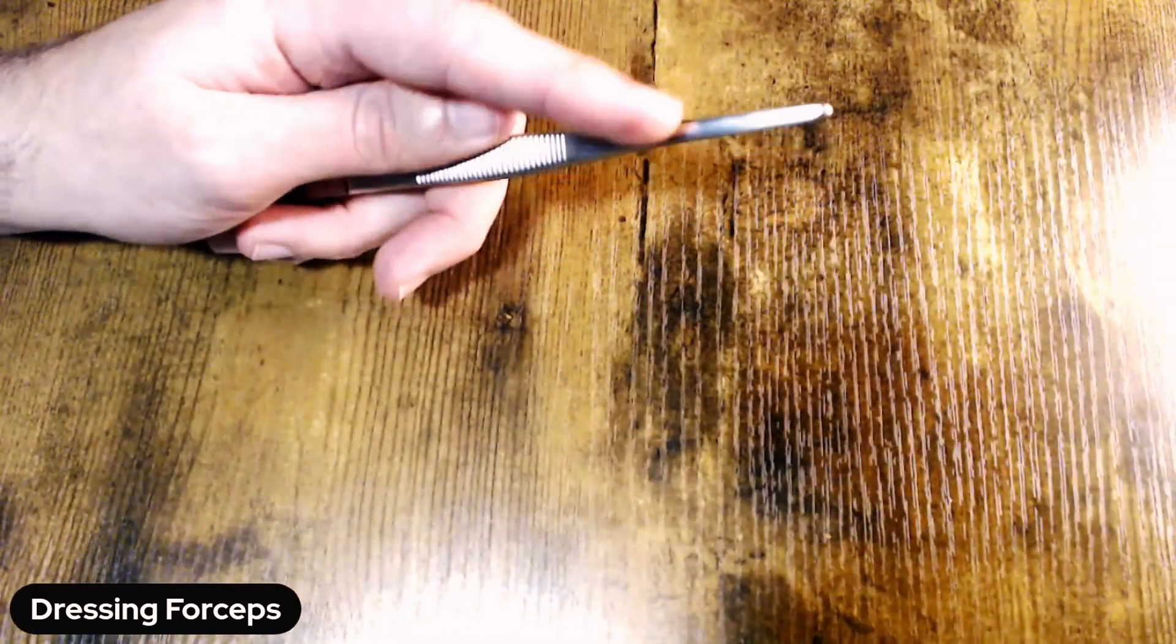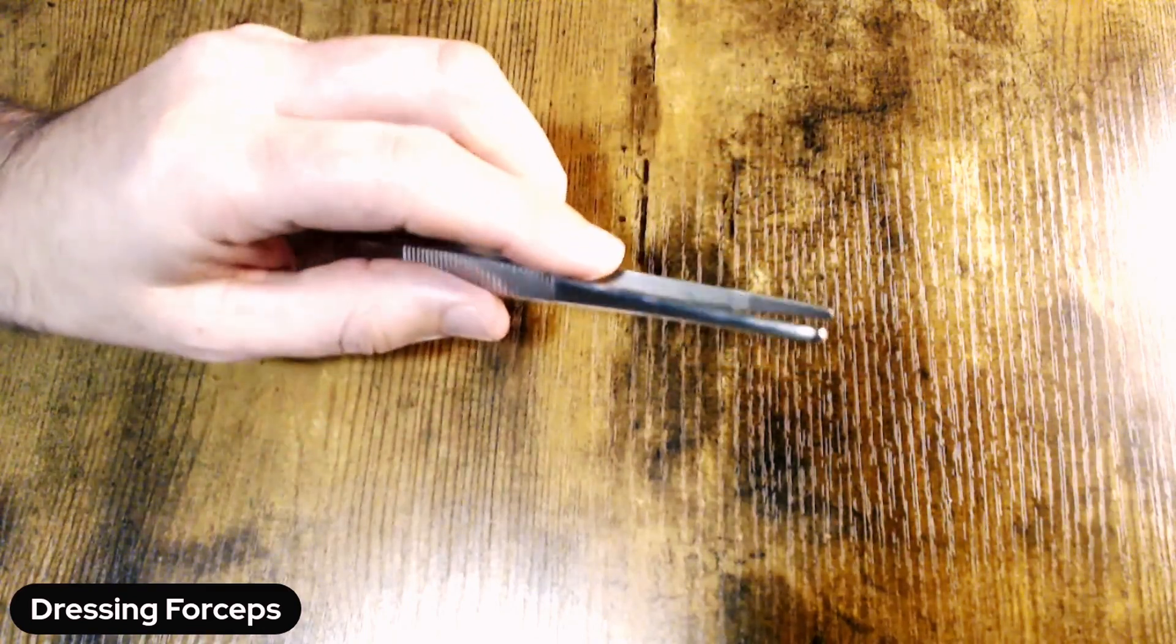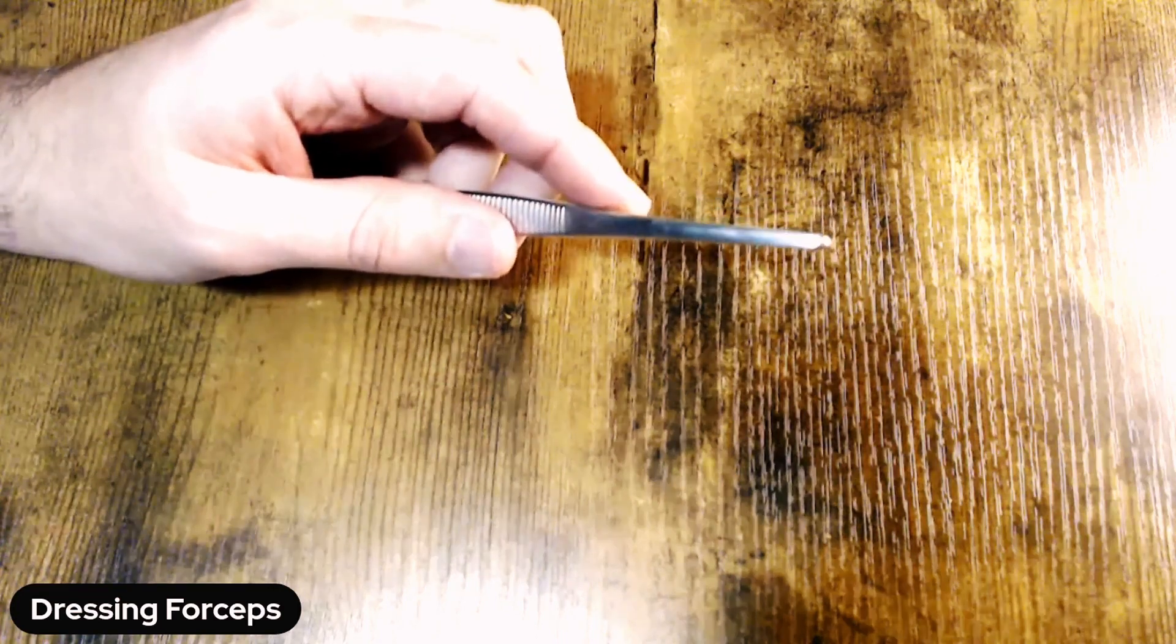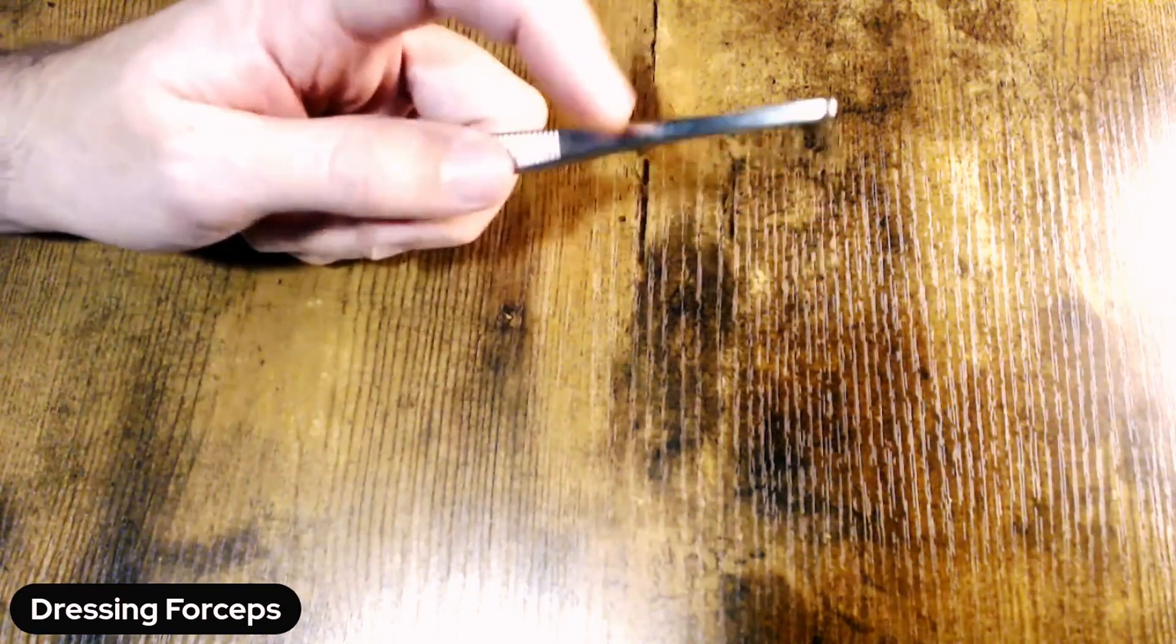Okay, so make sure you get the jaws aligned. If you have a forcep with teeth, we'll talk about that in another episode, but you don't want to hear any clicking or rubbing of teeth. But obviously because this is a dressing forcep, you have no teeth to worry about.